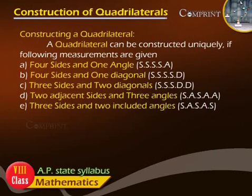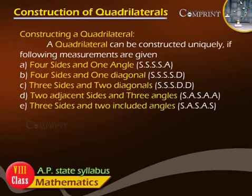A quadrilateral can be constructed uniquely if the following measurements are given: A. Four sides and one angle. B. Four sides and one diagonal. C. Three sides and two diagonals. D. Two adjacent sides and three angles. E. Three sides and two included angles.